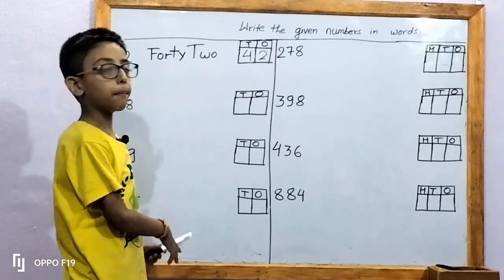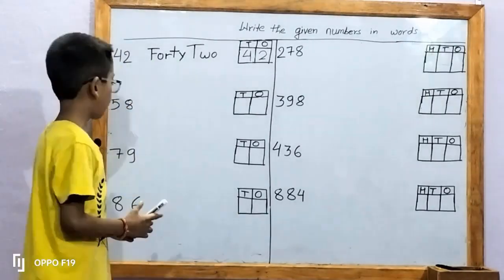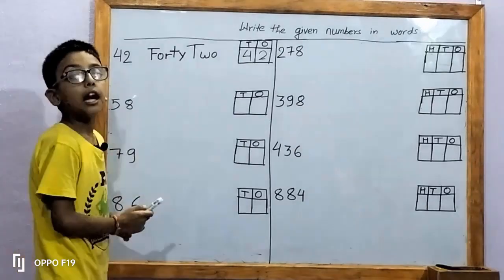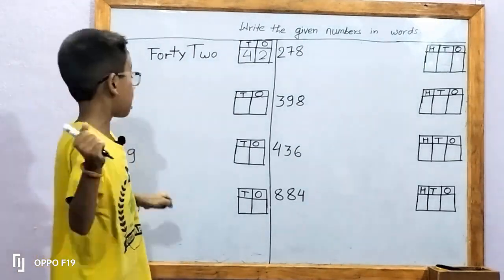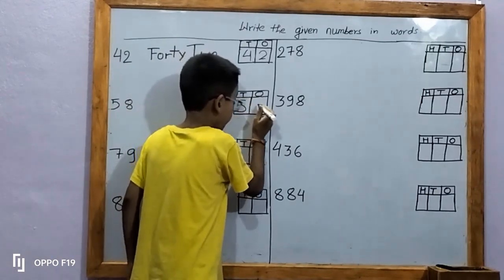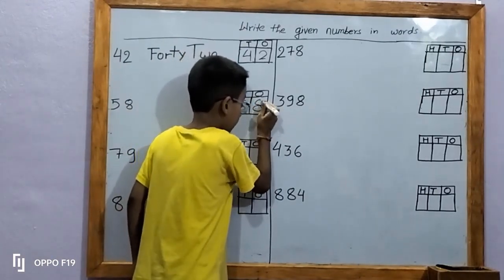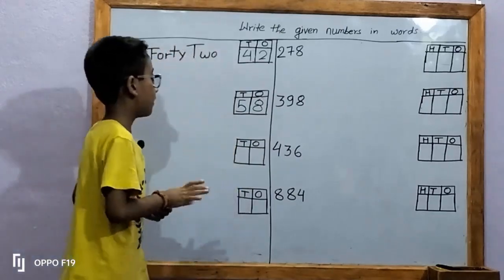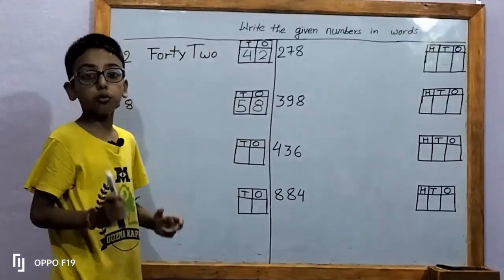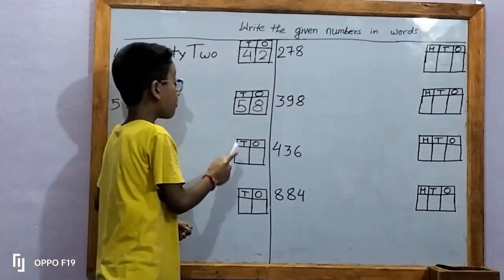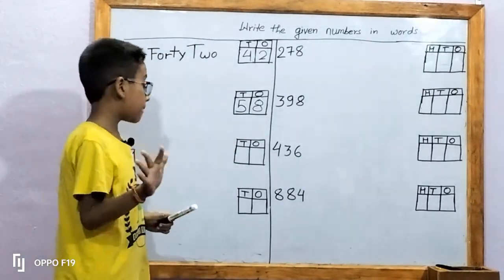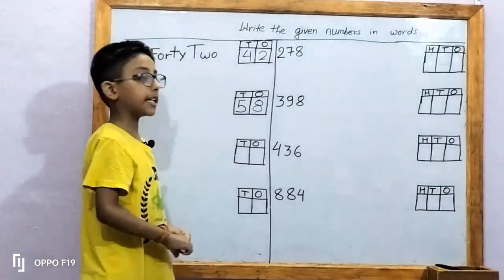Let's move on to the second number. In the second number, there's given five, eight — that is 58. Let's write in place. Eight is in one's place; eight ones means eight. Five is in ten's place; five tens means fifty. It makes the number fifty-eight.